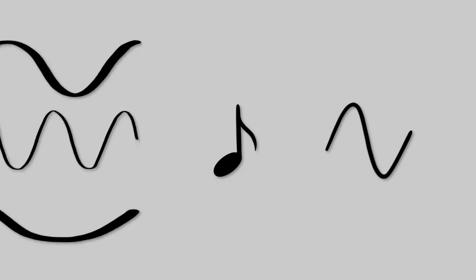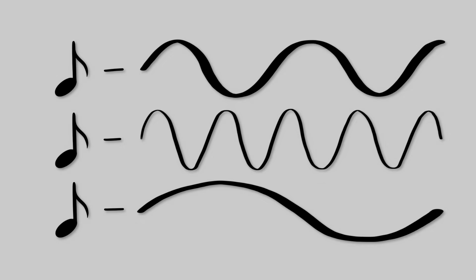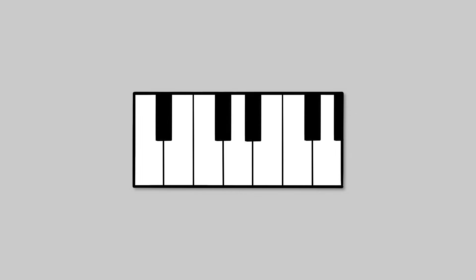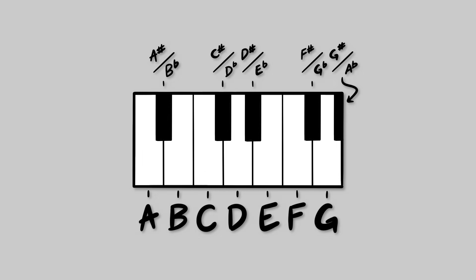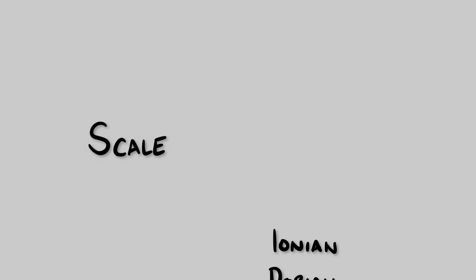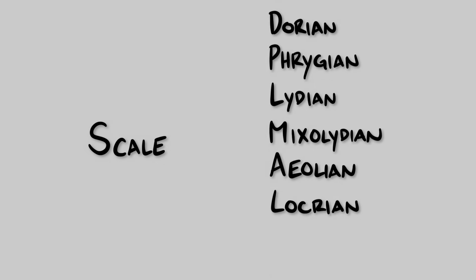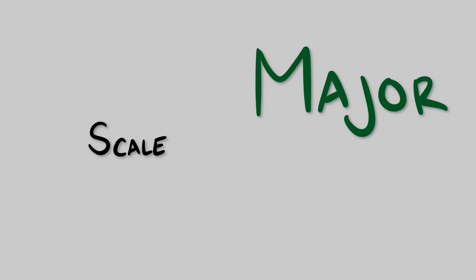The fundamental building blocks of most music are notes — sound waves vibrating at a specific frequency or pitch. Notes with different pitches are given different names. And while there are technically an infinite amount of notes, there are only 12 distinct ones available for a musician to use, A through G with a couple extra ones in between. If you play these notes in a certain sequence, what you get is something called a scale. There are specific patterns these sequences can follow that I'm not going to get into, but there are two that you need to know about here.